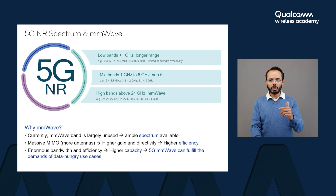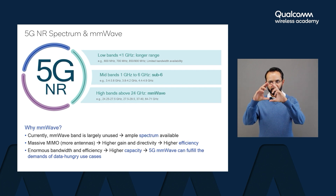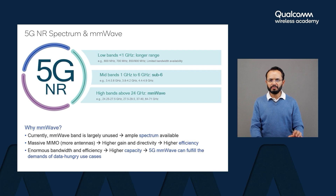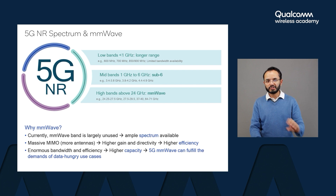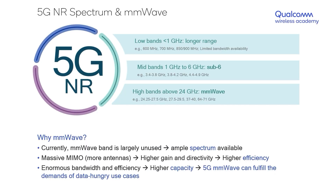With more antennas on the cell tower, it can transmit signals with considerably higher gain. Not only that, it can focus its transmitted signal precisely in the direction where the current user is located, avoiding wastage in lateral directions. This ability to focus transmitted energy precisely toward the user improves a performance metric known as directivity. Higher gain and higher directivity ultimately lead to higher signaling efficiency — the second key benefit of millimeter wave 5G.